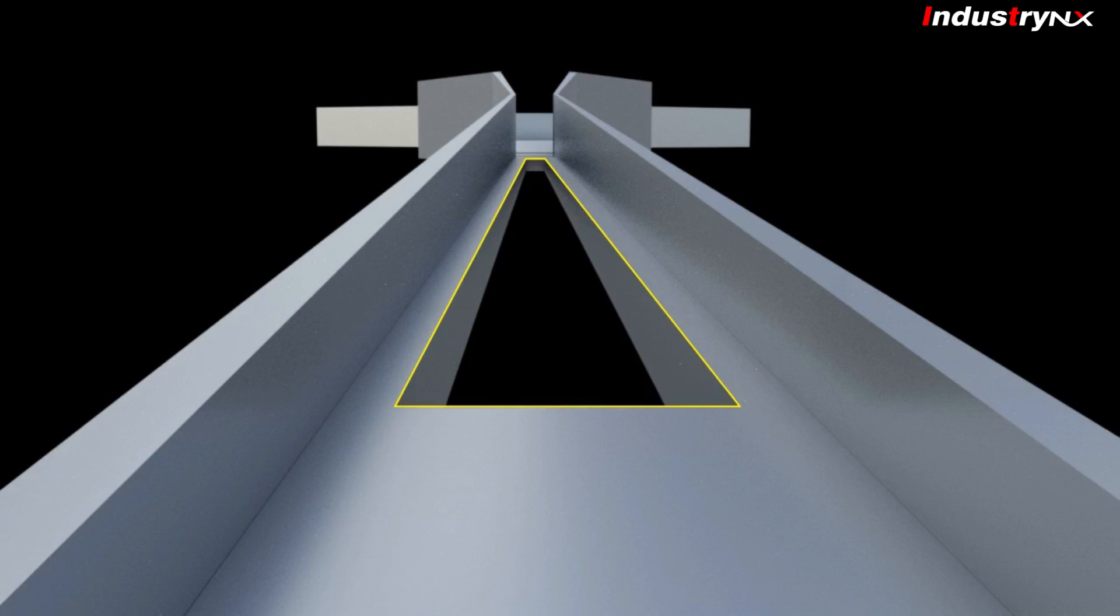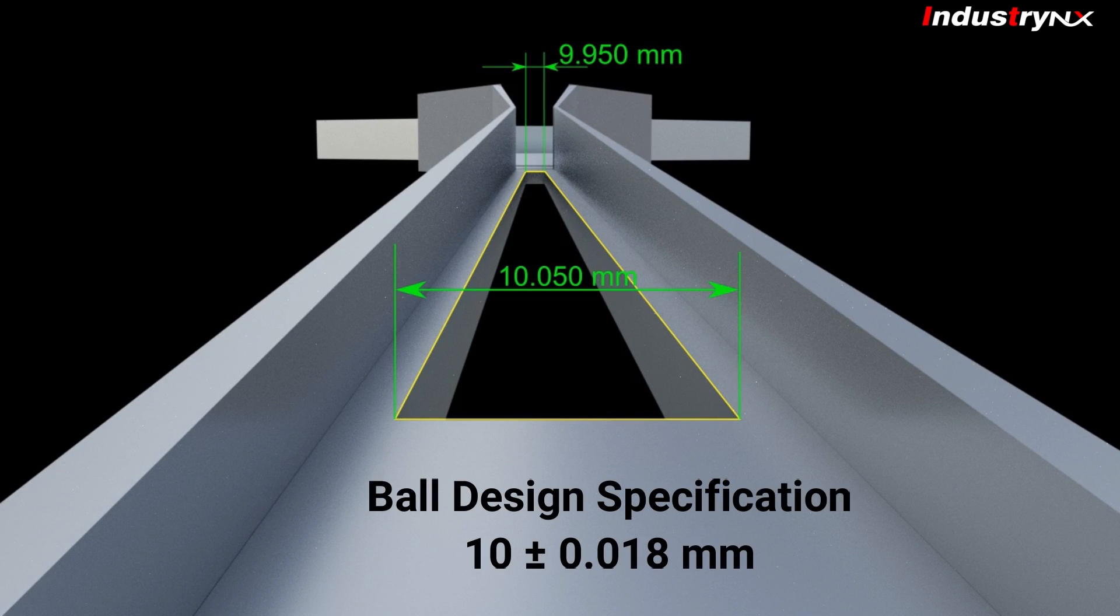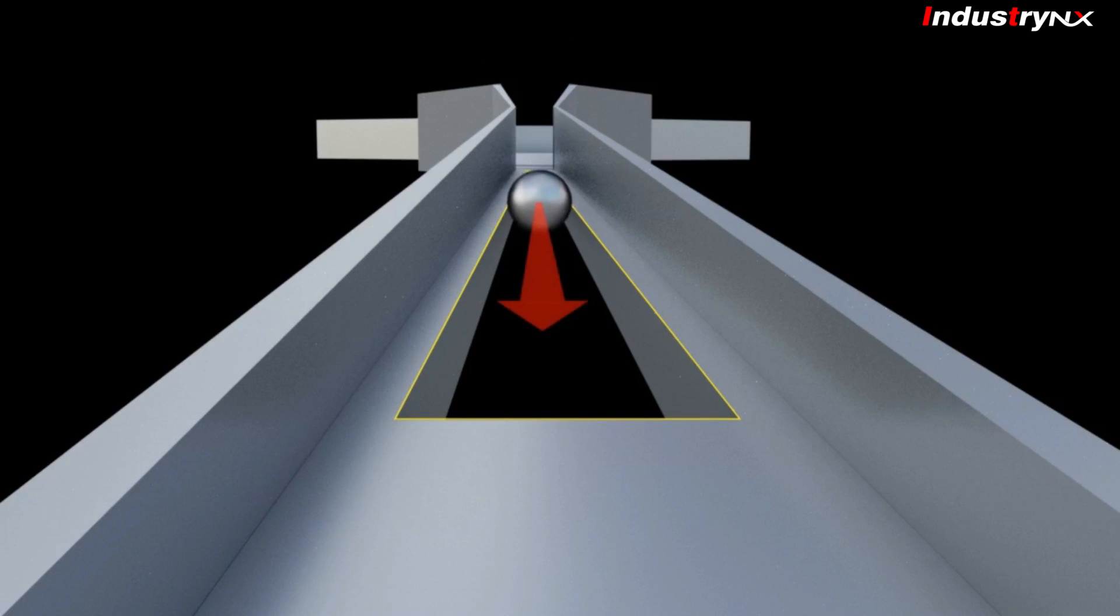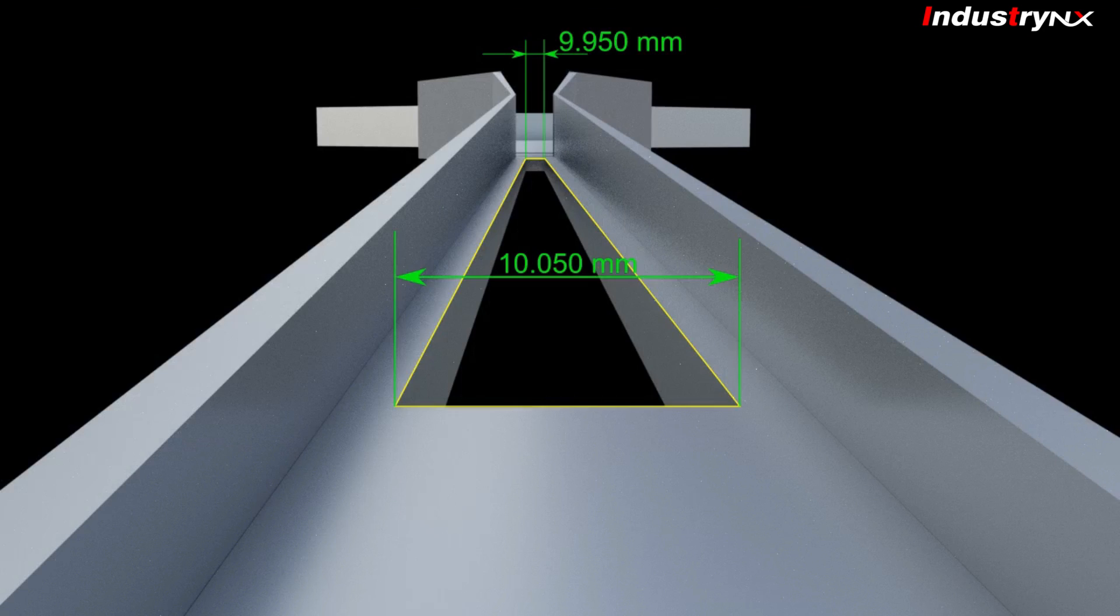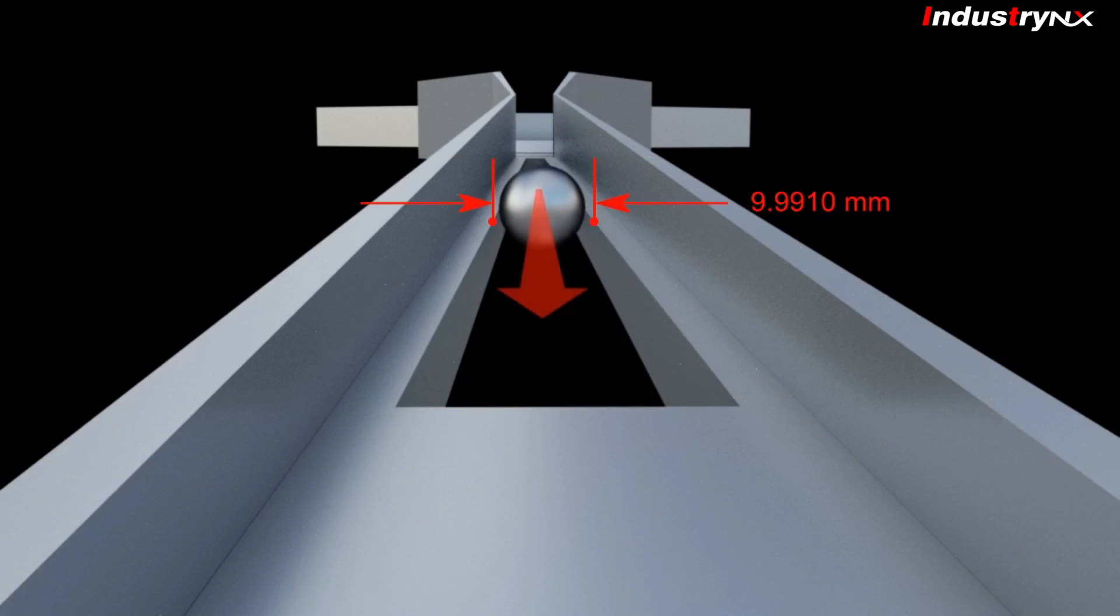As slot size at starting point is 9.950 mm and most of all balls are above 9.980 mm which is larger than 9.950 mm, hence the ball will slowly roll towards end of the slot, but slot width will be increasing along the length. Let us assume a particular ball size is 9.991 mm, so it will get dropped as soon as it reaches to the slot width of 9.991 mm.